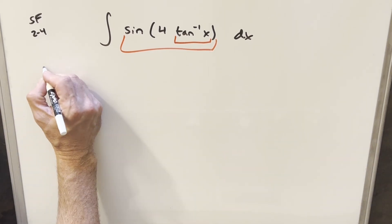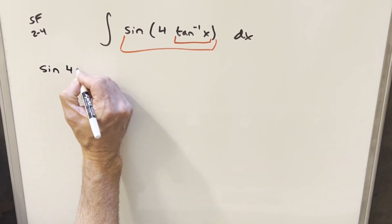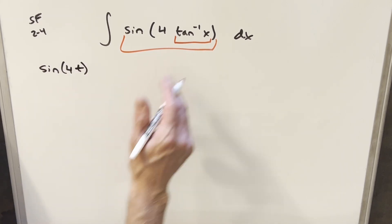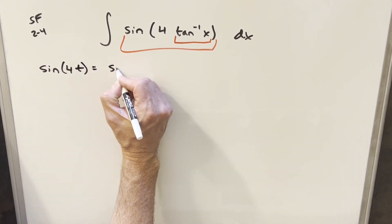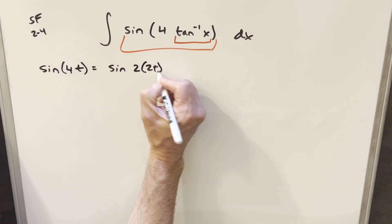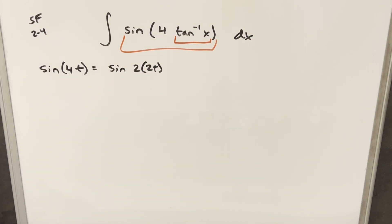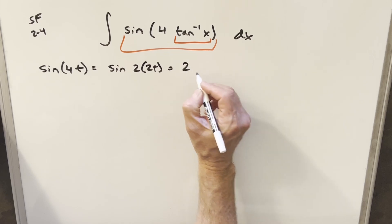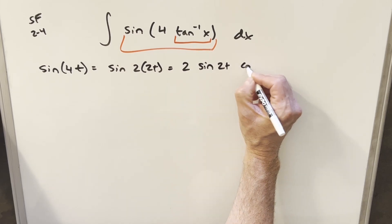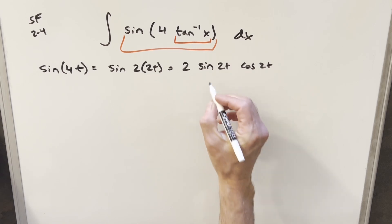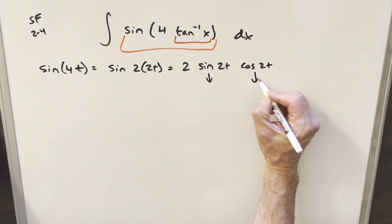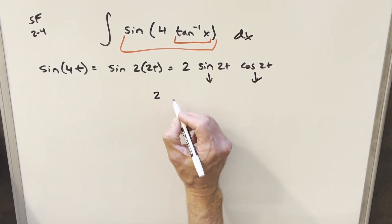I'm going to write this expression as sine(4t), where t is arctan(x). Then I can also write this as sine(2 · 2t) in order to use the double angle formula for sine. Doing that, we get 2·sine(2t)·cos(2t). Then I can use the double angle formula for sine again, and also the double angle formula for cosine.